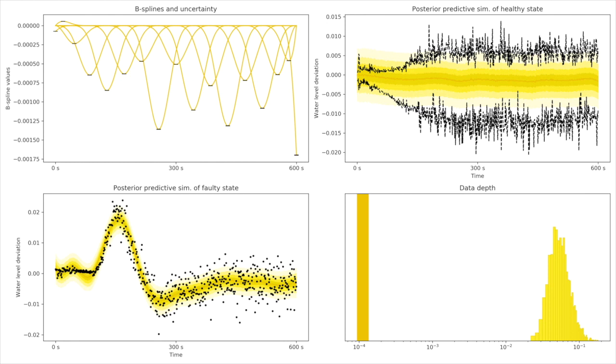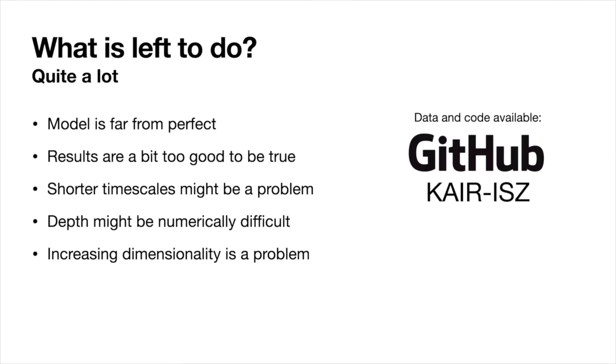We can see that there is some kind of efficiency in this data depth analysis. However, there is a lot more things that we should do. Our model is far from perfect. There is a justification from such analysis of model deviation from the considered trajectory, because there is a support in the theory of linear approximations of non-linear systems. Natural skepticism suggests that results are a bit too good to be true. Probably in shorter time scales, there might be problems with capturing the behavior. So this is something that we will be investigating more.